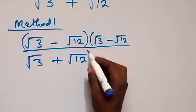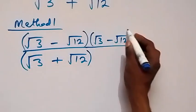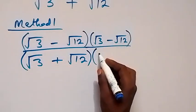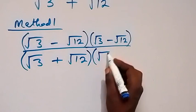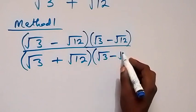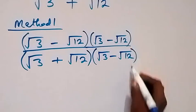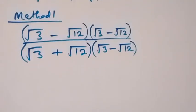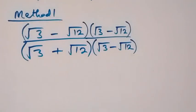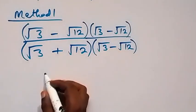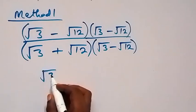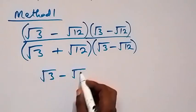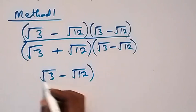And also we divide by that, so we multiply by it. We have root 3 minus root 12. And from here, these two brackets multiply, so it's going to be root 3 minus root 12 squared.